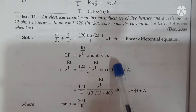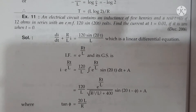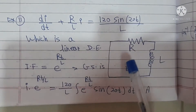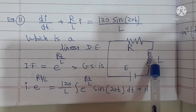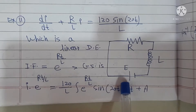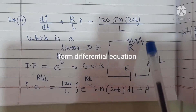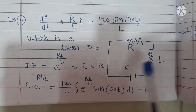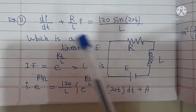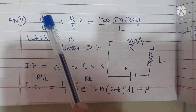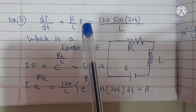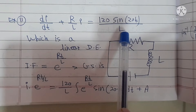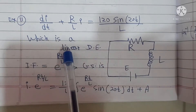Now let us understand the problem. In the problem, there is one circuit in which resistance R is connected in series with inductance L and a battery. According to Kirchhoff's law, the voltage drop across the resistance plus the voltage drop across the inductance equals the EMF in the circuit. This gives the equation dI/dt plus (R/L)·I equals 120·sin(20T)/L, which is a linear differential equation.